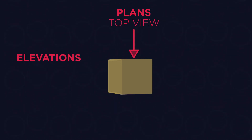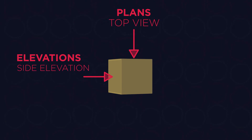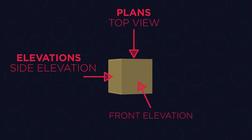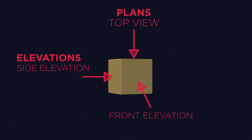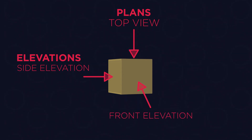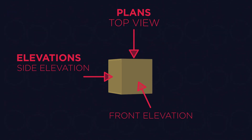When it comes to elevations, there are two types: side elevation and front elevation. Side elevation is what you would see if you looked at the 3D shape from the side, and the same but from the front for the front elevation. Given you know the dimensions of a 3D shape, you can determine its plans and elevations.